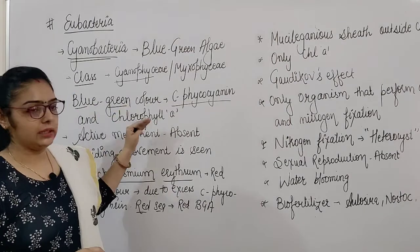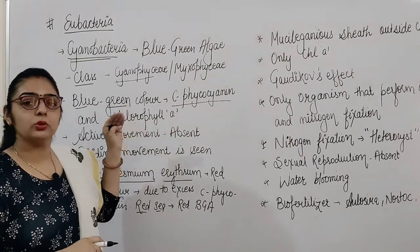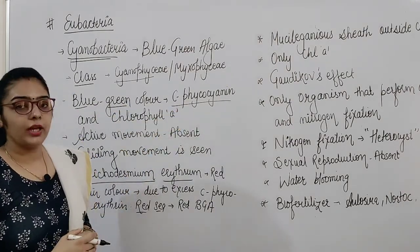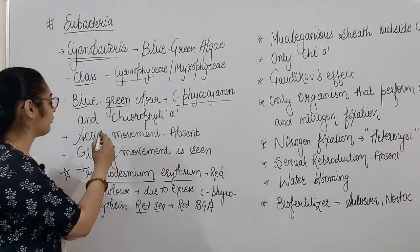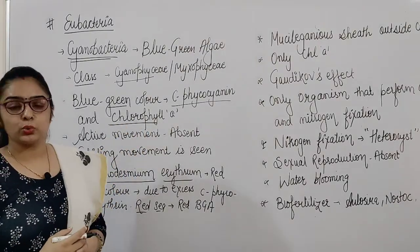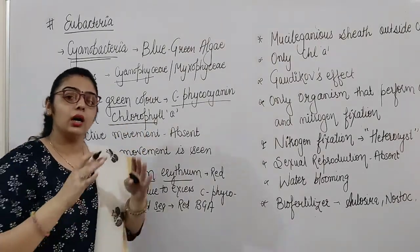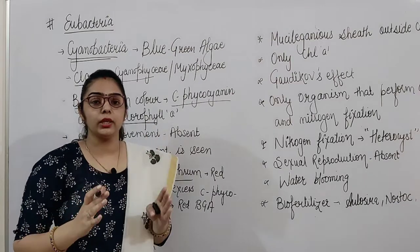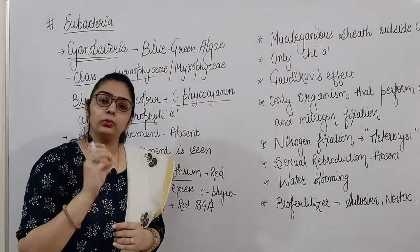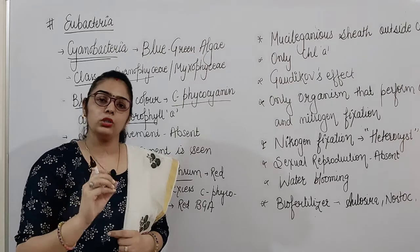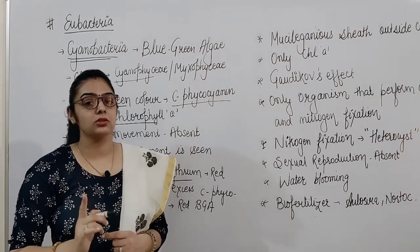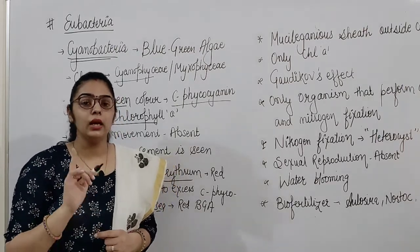The blue color in blue-green algae is due to the pigment C-phycocyanin, and the green color is due to chlorophyll A. If we talk about chlorophyll, which is a photosynthetic pigment, then in blue-green algae there is only one photosynthetic pigment present — that is chlorophyll A.